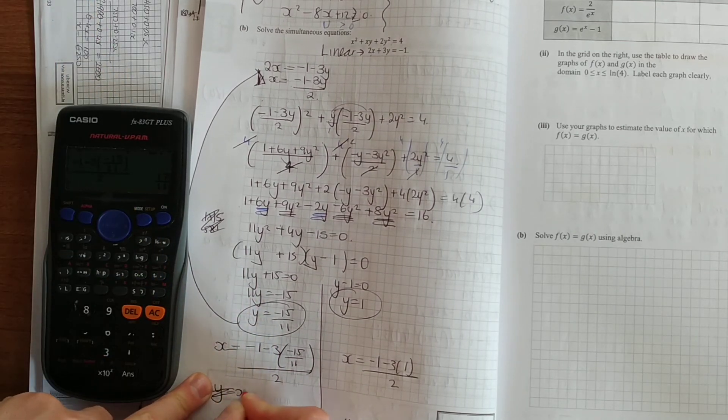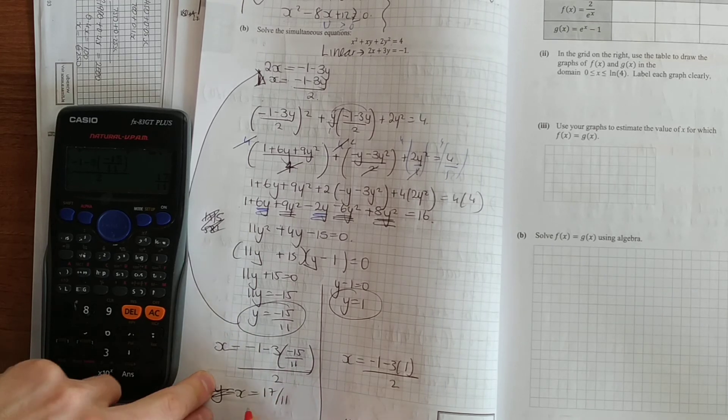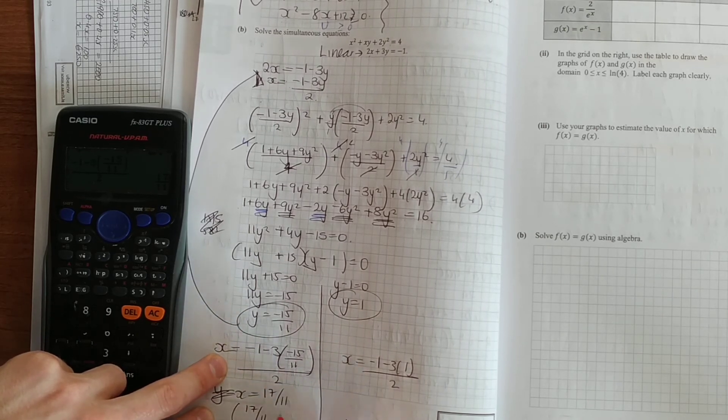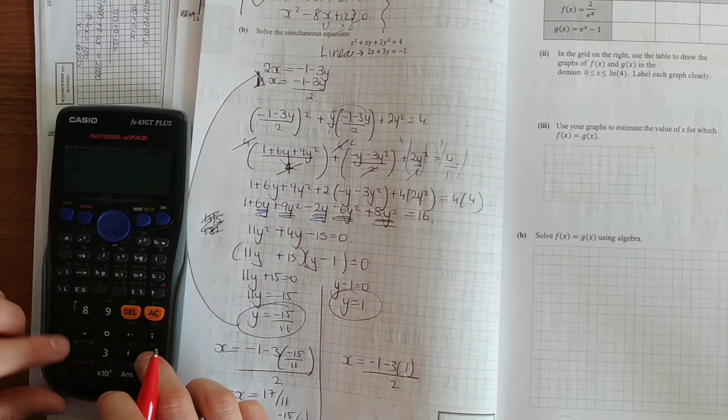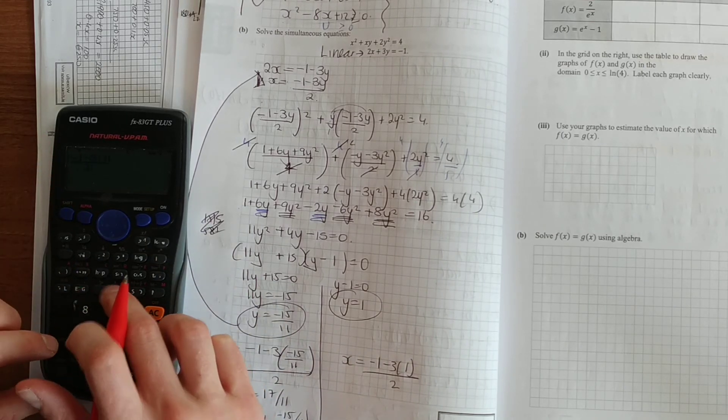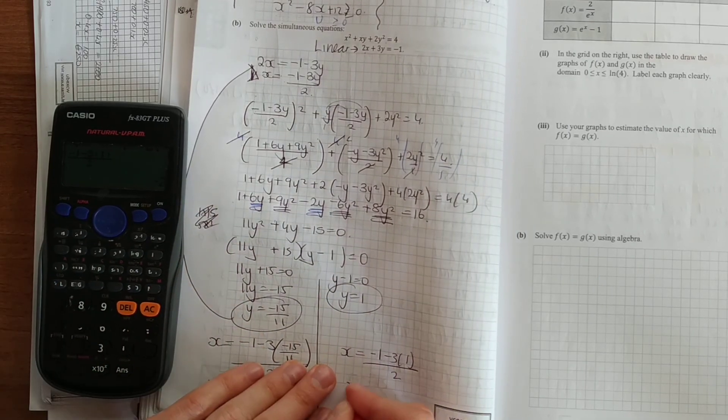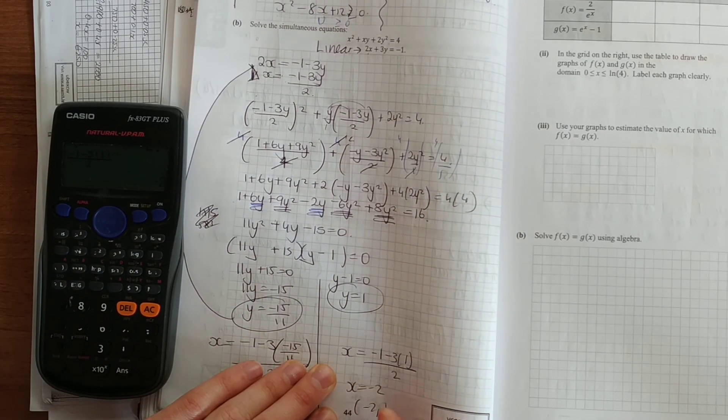17 over 11. No. x equal to 17 over 11. So our point there, 17 over 11, minus 15 over 11. And for the next one, minus 2. So minus 2 is 1.